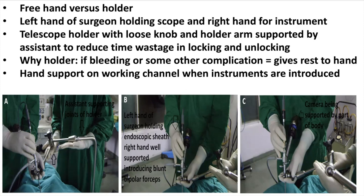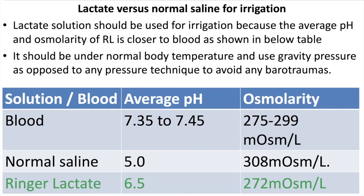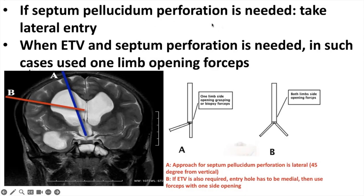Though ETV is a short procedure, a telescope holder is useful — if there is bleeding or complications, the surgeon can station the endoscope in the lateral ventricle and rest the hand. Lactated Ringer's solution should be used for irrigation because its average pH and osmolarity is closer to blood. The fluid should be at normal body temperature. Normal gravity pressure should be used, rather than pressurized techniques, to avoid biotrauma to the brain.